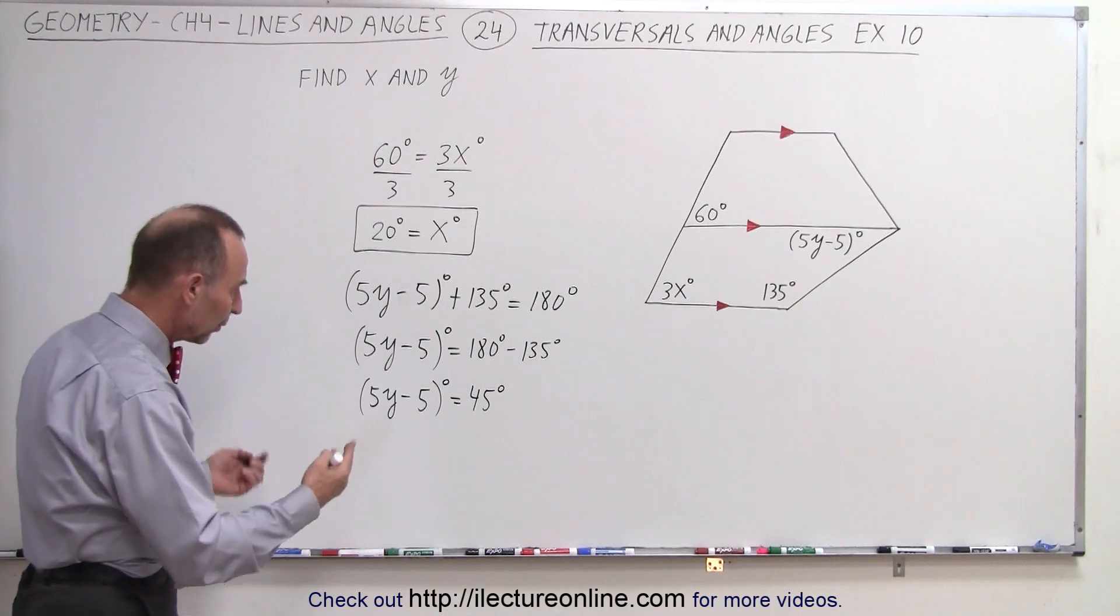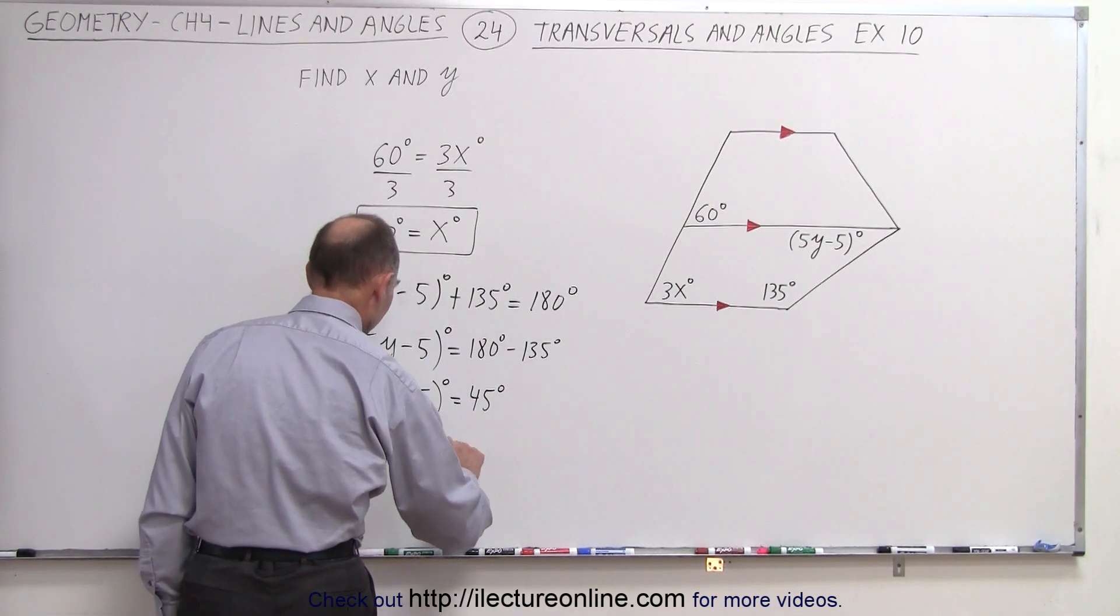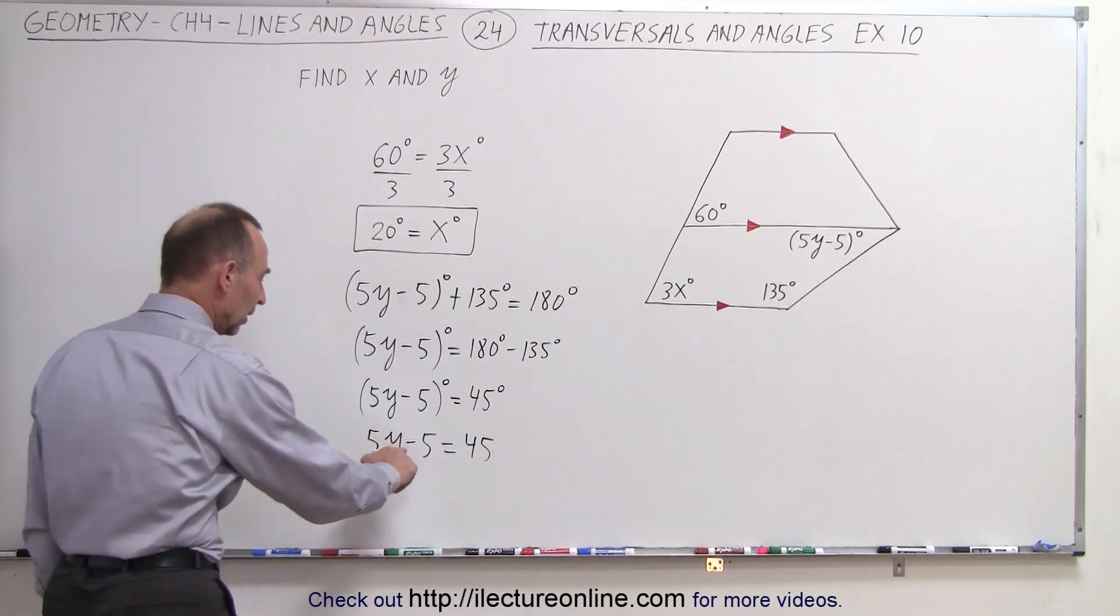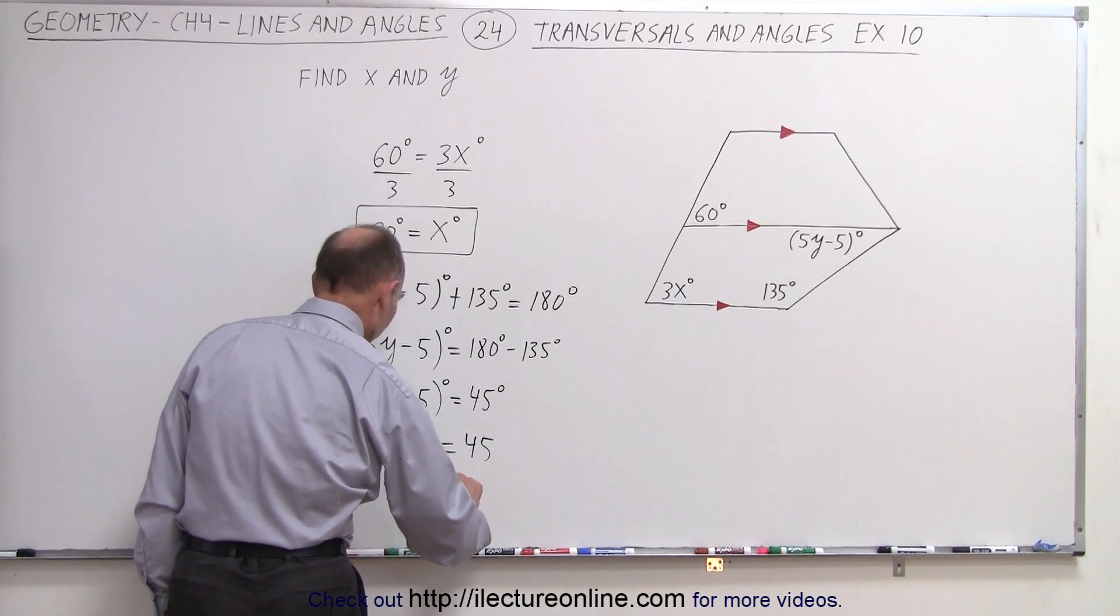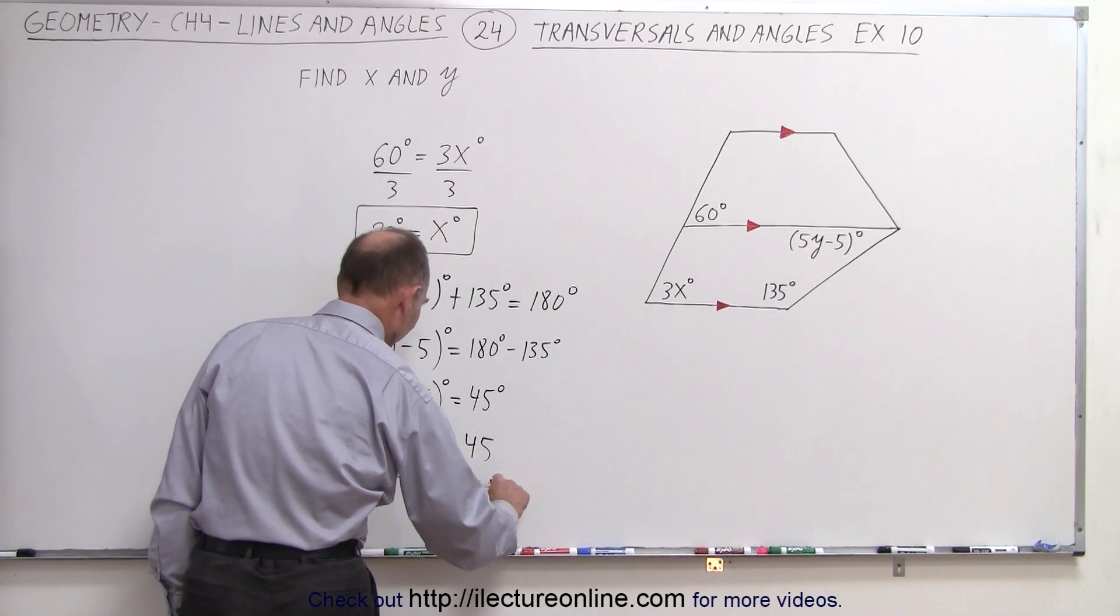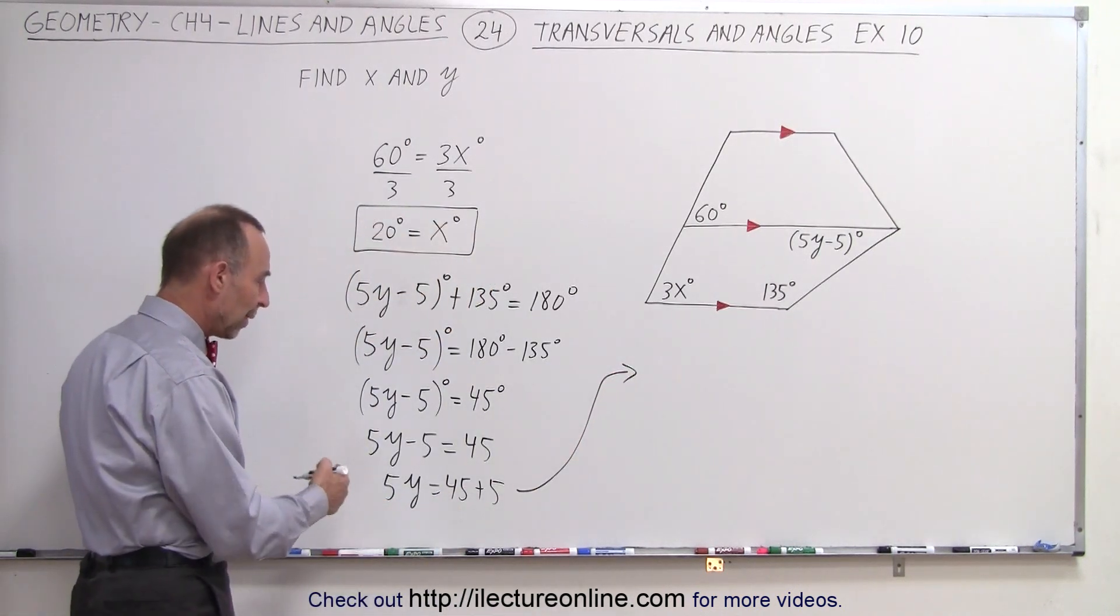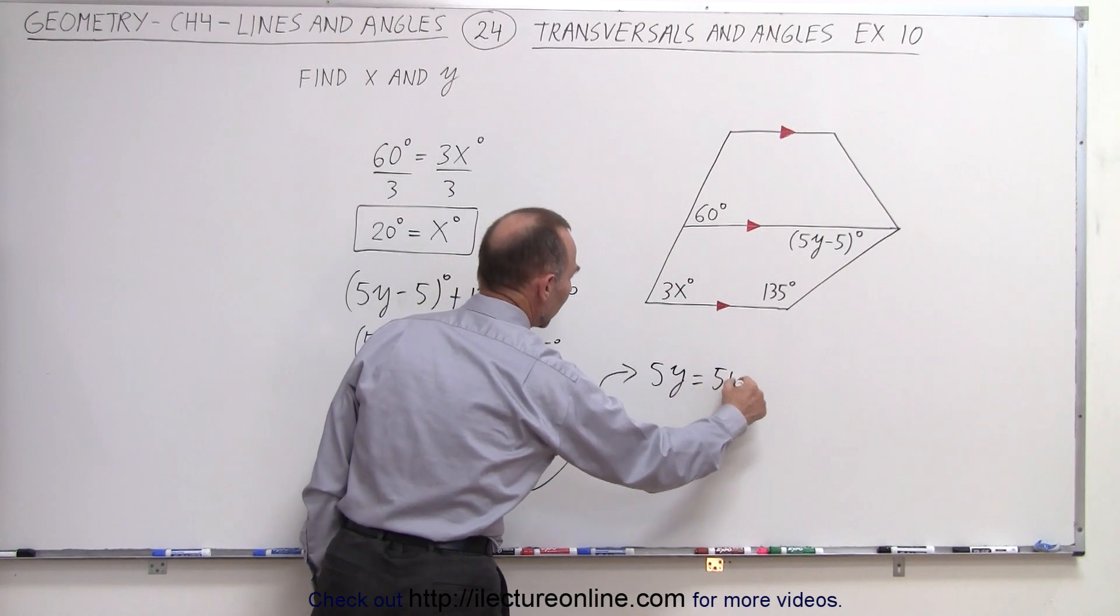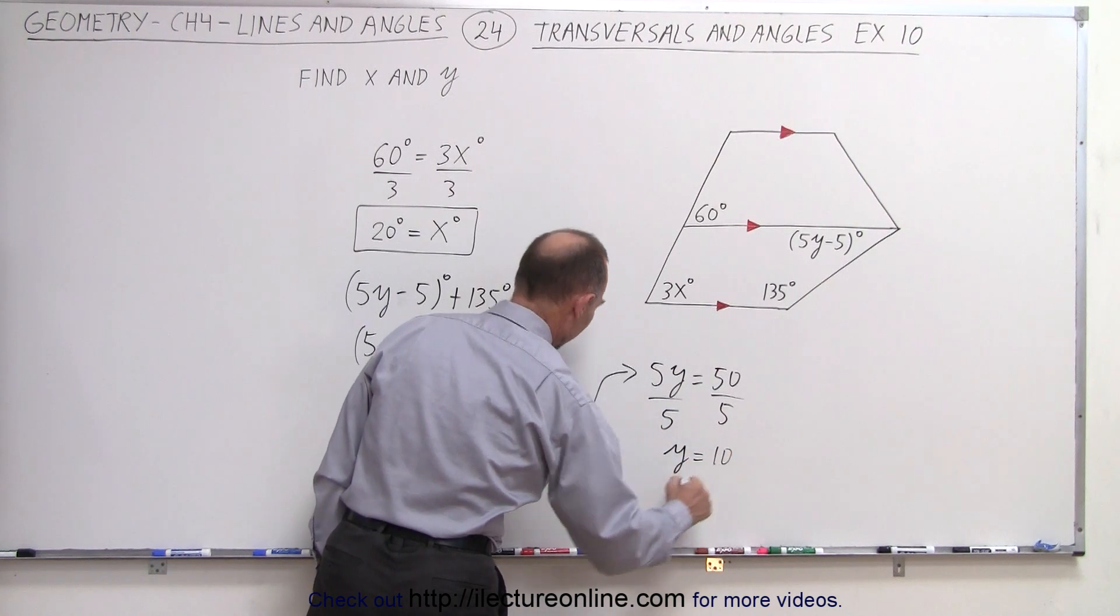To solve it, we can get rid of the degrees. We can simply write that 5y minus 5 is equal to 45, and then we'll put the degrees back on later. Add 5 to both sides. So we get 5y equals 45 plus 5. And then continuing over here, we can then say that 5y equals 50. And then if we divide both sides by 5, we get y is equal to 10.